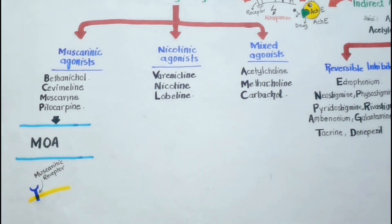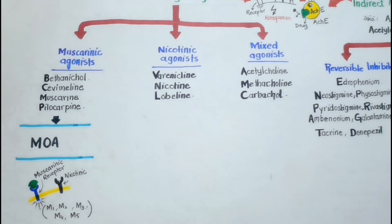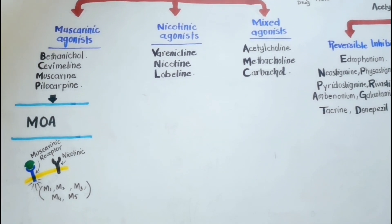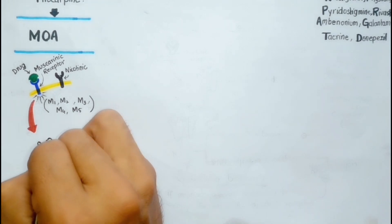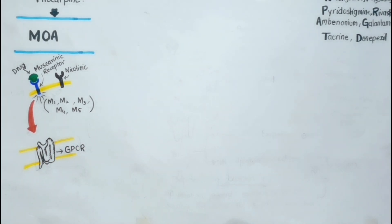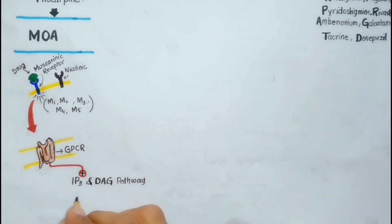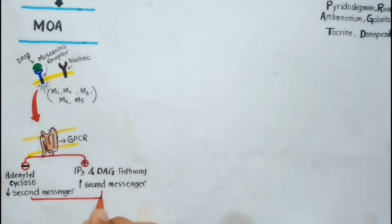Muscarinic agonists bind to muscarinic receptors only. There are five subtypes of muscarinic receptors: M1, M2, M3, M4, and M5. We have already uploaded a video on cholinergic receptors, so if you are new here please watch it for better understanding. All muscarinic receptors are G-protein coupled receptors, and once binding occurs it results in various intracellular second messenger generation through activation of the IP3 pathway or inhibition of second messenger by inhibiting adenylyl cyclase, which causes the final cellular effects.